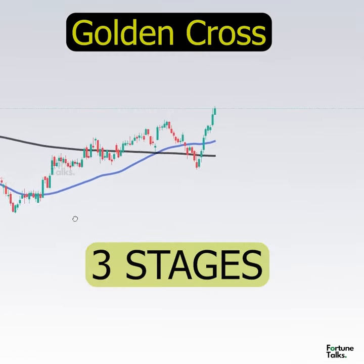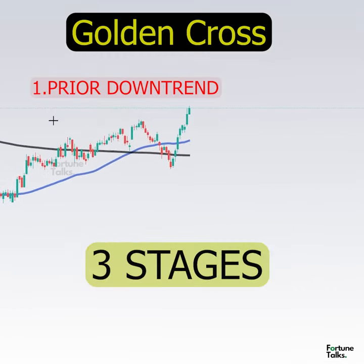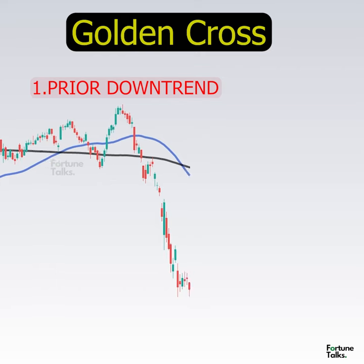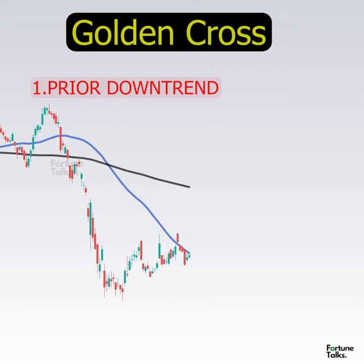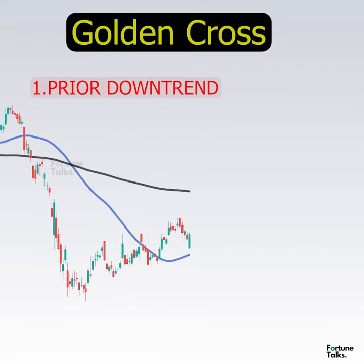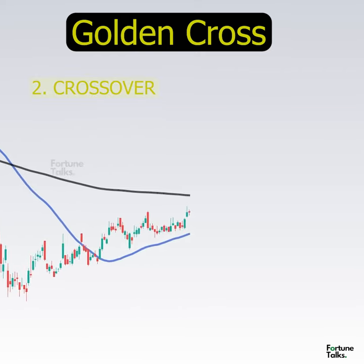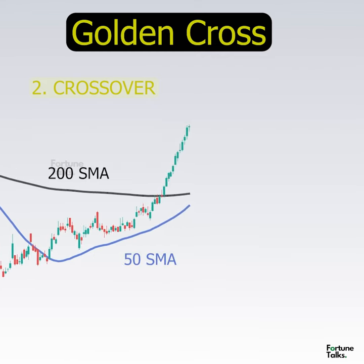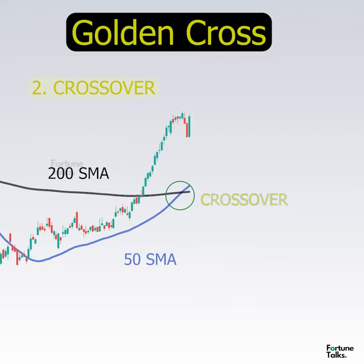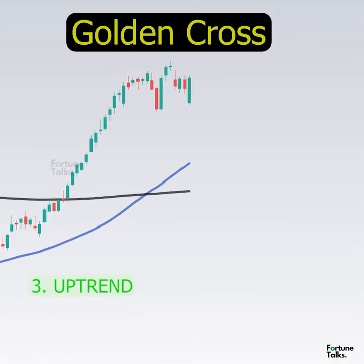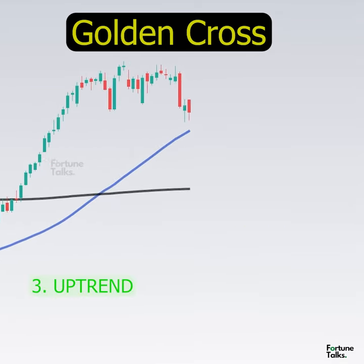There are three stages to a golden cross. The first stage includes a downtrend that eventually bottoms out as selling is depleted. In the second stage, the 50-SMA crosses over the 200-period moving average to trigger a breakout and confirmation of trend reversal. The last stage is the continuing uptrend of prices.